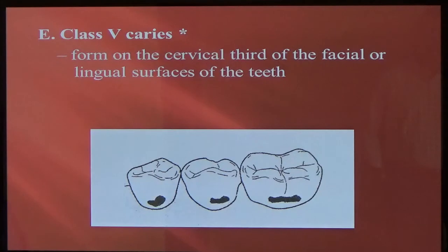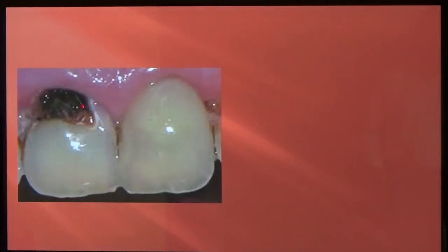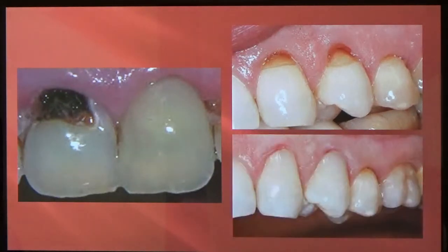Next one is class 5. Class 5s are on the cervical third of either front teeth or back teeth — it doesn't matter — and it could be on the facial side or it could be on the lingual side. Class 5s are on the cervical third of any tooth, meaning down by the gum line on the cervical third. Here's a big class 5 on a central incisor. These are attritions or toothbrush abrasions — they're very common. You can see them on the cervical third or the gingival third of the anatomic crown, and there they are restored.